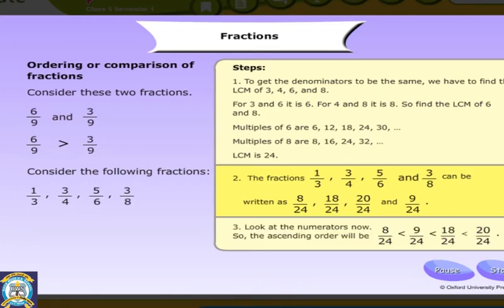Step 3. Look at the numerators now. So, the ascending order will be 8 by 24 less than 9 by 24 less than 18 by 24 less than 20 by 24.